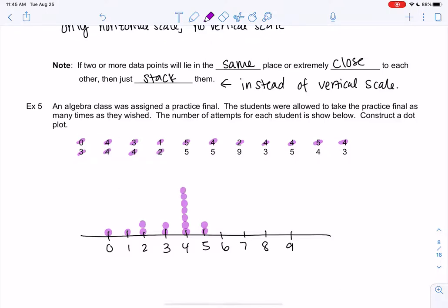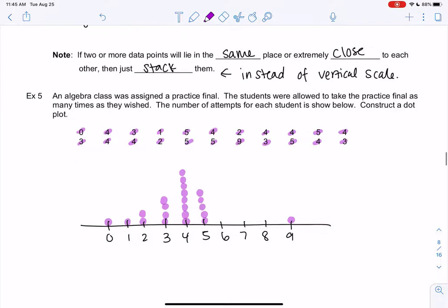Two, two fives. We get a nine, three, five, four, and three. And we get something like this. Six, seven, and eight, even though they're empty, they need to be there. So we don't jump from five to nine. That would be misleading. We're going to label number of attempts. We want to make sure when we look at the graph, we know what it's measuring.